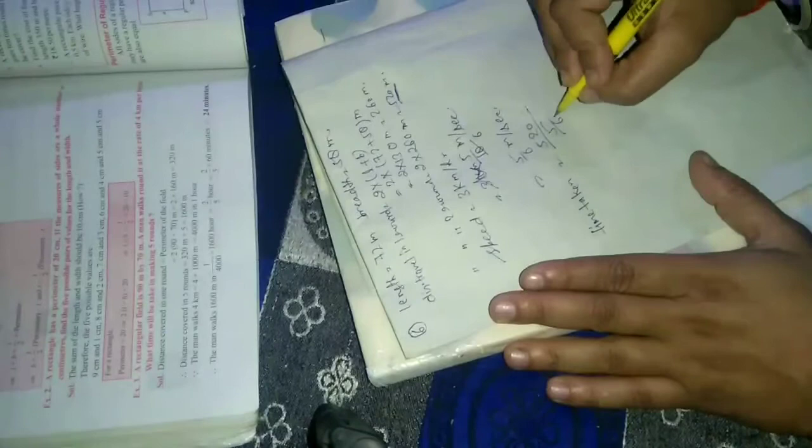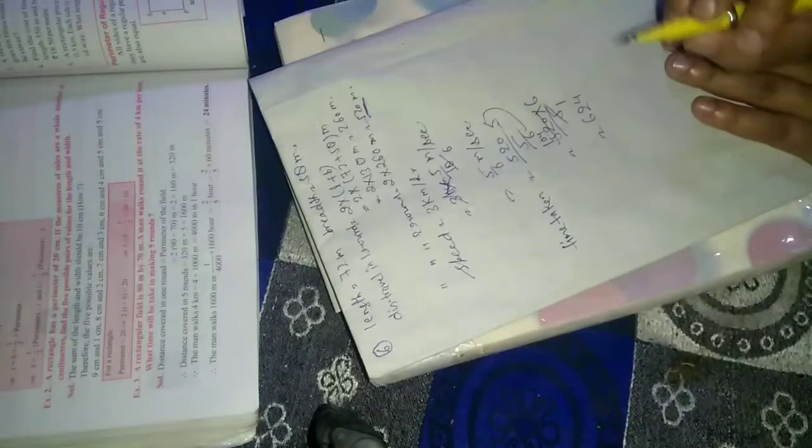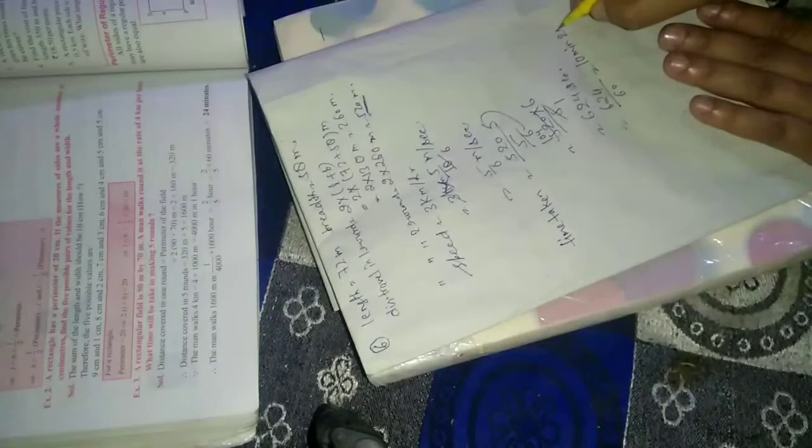Time equals distance upon speed, 5 upon 6, the 6 goes to 520 into 6 upon 5, answer is 624 seconds. Now I am going to change 624 upon 60 equal to 10 minutes 24 seconds. 10 minutes 24 seconds, 2 rounds complete.